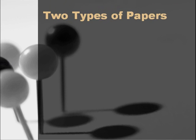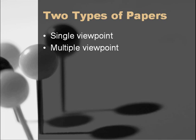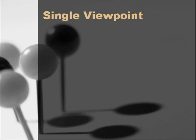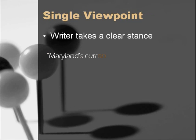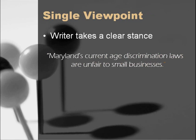There are two types of papers that you can write: single viewpoint or multiple viewpoint. In the single viewpoint paper, you, the writer, take a clear stance or position on the issue you've chosen. For example, consider this thesis: Maryland's current age discrimination laws are unfair to small businesses. Clearly, this writer has a definite point of view on the issue, and in this paper the writer will present arguments or reasons to prove the truth and validity of that belief.